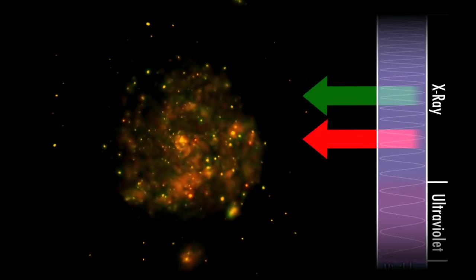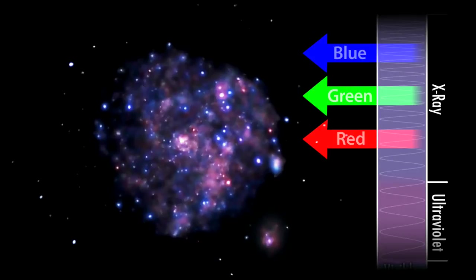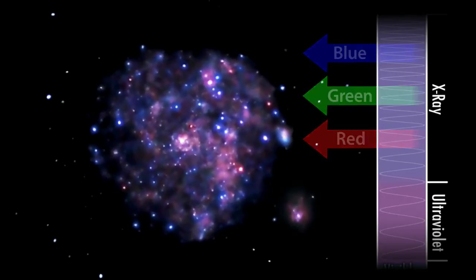We do the same thing with this Chandra image, but now we're using X-ray observations as the source. The colors we see now mean something entirely different than they did in the Spitzer image.